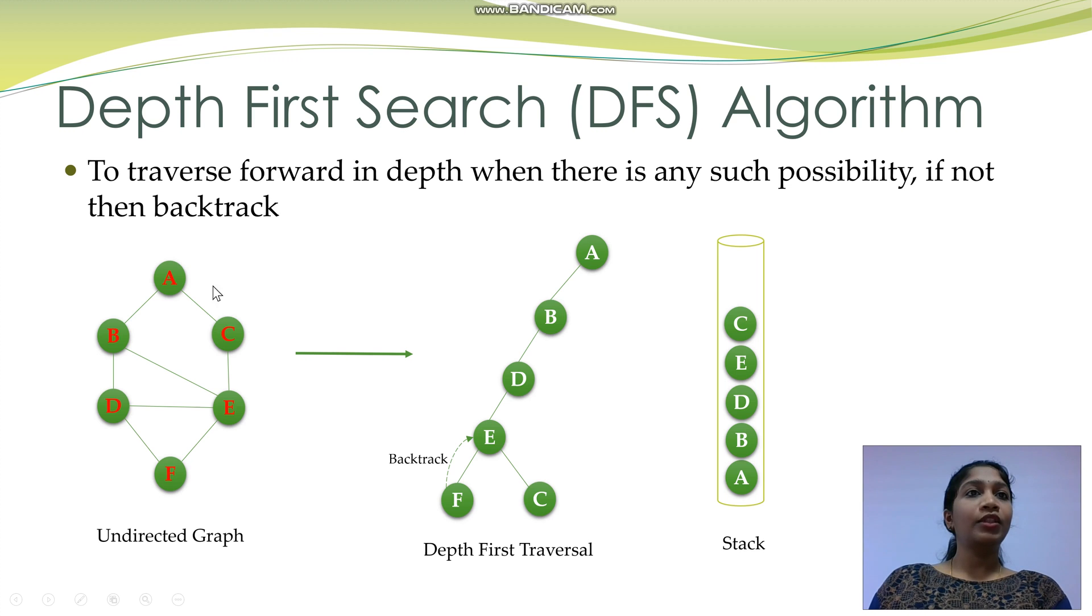You can see that all the vertices have been marked in red, which means all of them are already visited. But the program needs to check this. So, from C, backtrack to E. Pop C from the stack and check if there are any unvisited nodes. There are none.